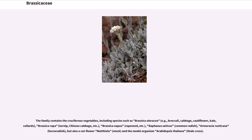The family contains the cruciferous vegetables, including species such as Brassica oleracea — for example, broccoli, cabbage, cauliflower, kale, collards — Brassica rapa (turnip, Chinese cabbage, etc.), Brassica napus (rapeseed), Raphanus sativus (common radish), Armoracia rusticana (horseradish), but also a cut flower Matthiola (stock), and the model organism Arabidopsis thaliana (thale cress).